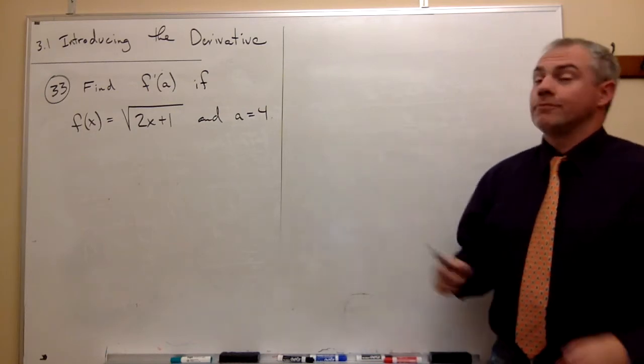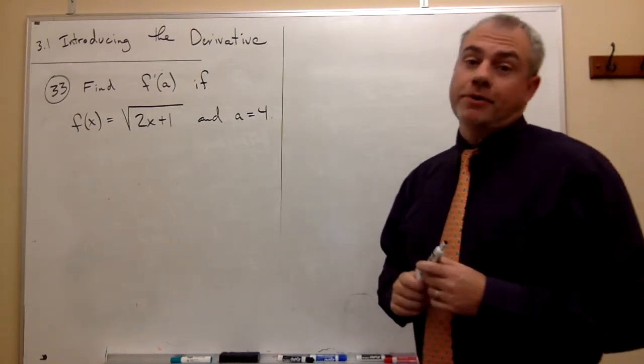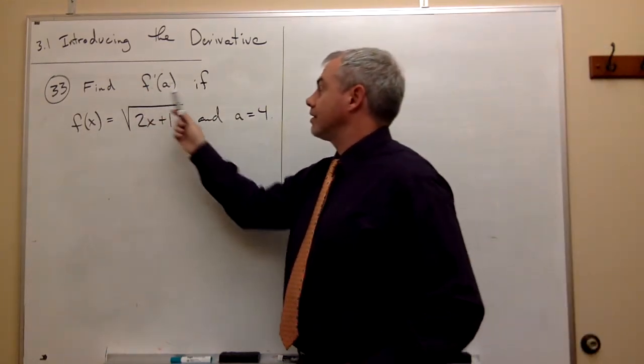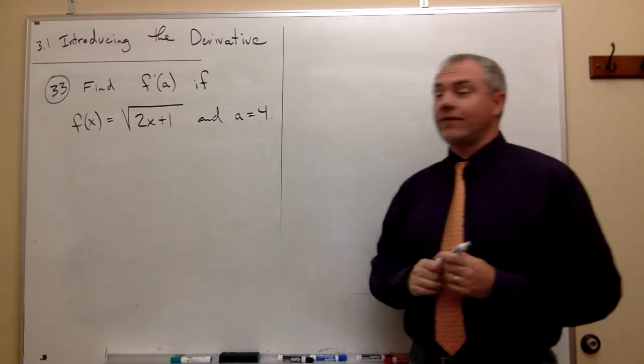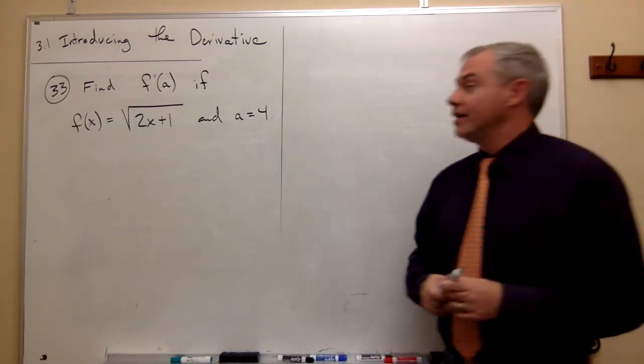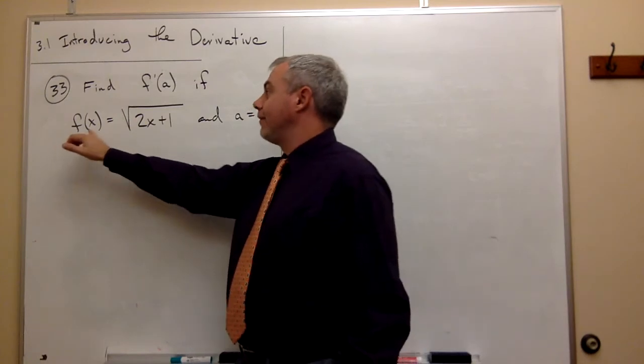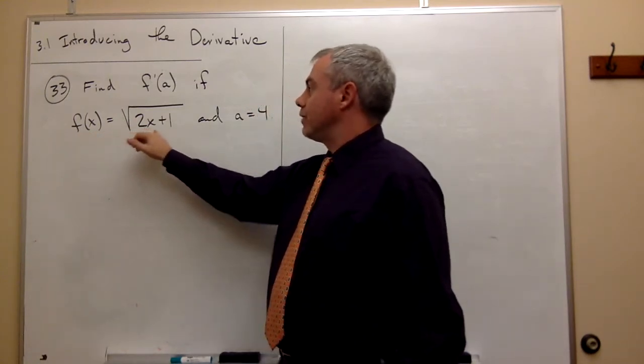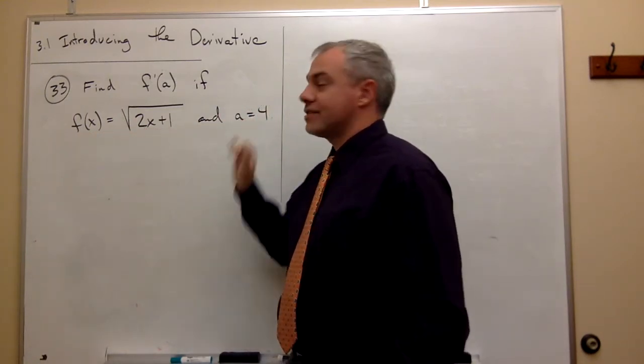Welcome back. Let's look at problem number 33. In problem number 33, we want to find the derivative of f at the point a if the function f of x is equal to the square root of 2x plus 1 and a is 4.